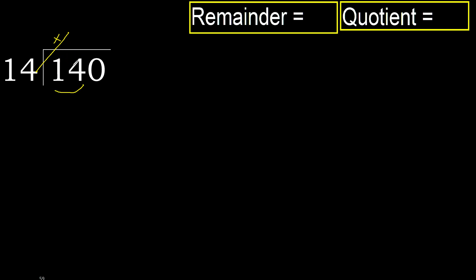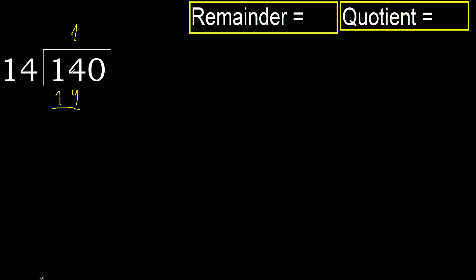But not greater? 14 multiplied by 2 is 28, which is greater. Multiply by 1: 14 is not greater. OK, subtract: 14 minus 14.